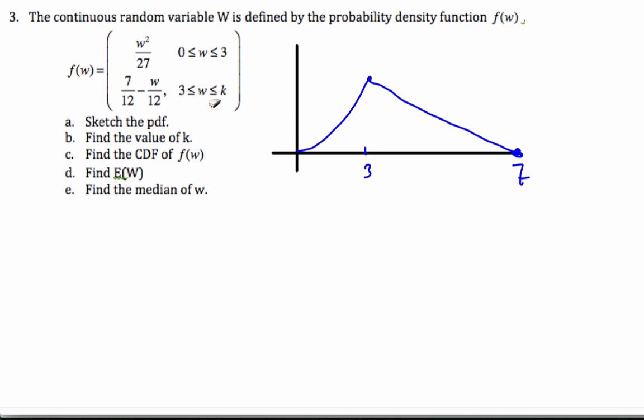Now we want to find the value of k. Well, I've actually just done that. This value of k has to be 7. So k equals 7, where it ends because this line goes downwards.